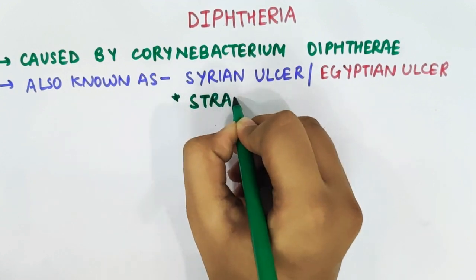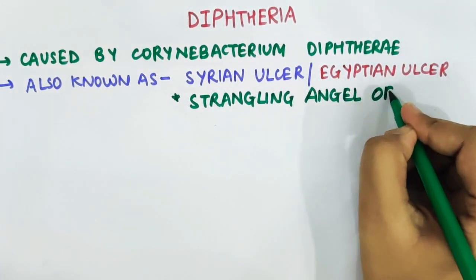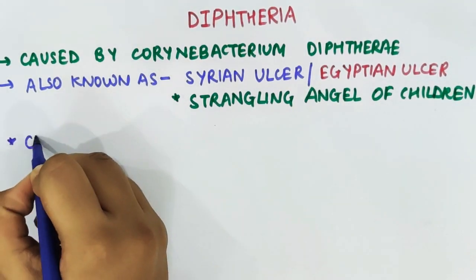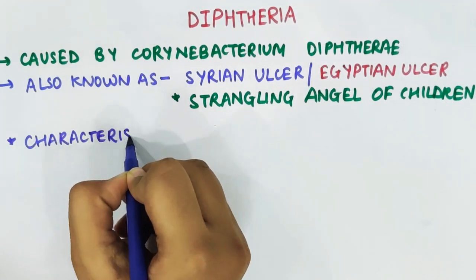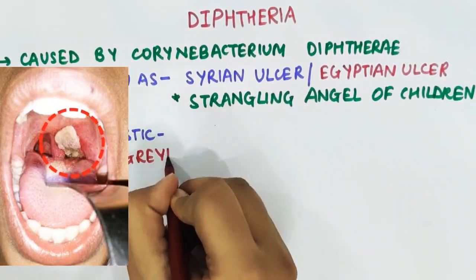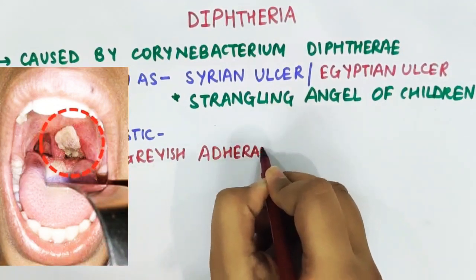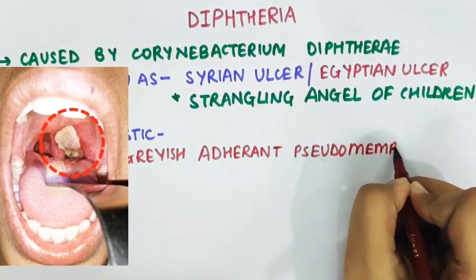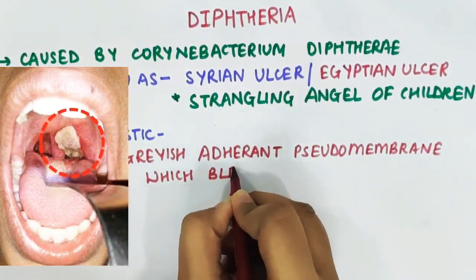There are some characteristic points particular to diphtheria which help in identifying the disease. The first important characteristic is the presence of an adherent pseudomembrane which bleeds on removal — a grayish-green membrane that is a very thin, curtain-like pseudomembrane which bleeds on removal.